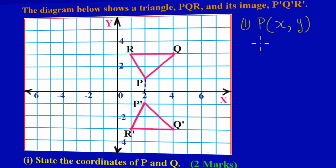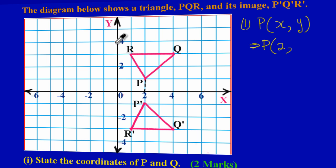So I can fill in the blanks: the coordinate for P — open bracket — my x value is 2. Now I need to find the corresponding y value. But first, there's something important about the scale on our Cartesian plane that we must take note of. On the x-axis, starting from the origin, they skip a unit and then we have a 2, then another unit is skipped and we have a 4.